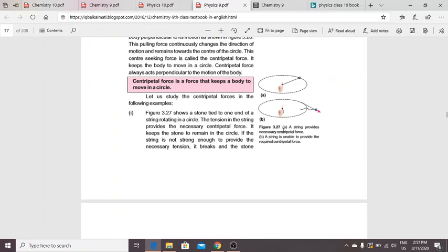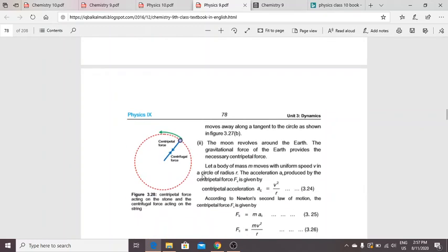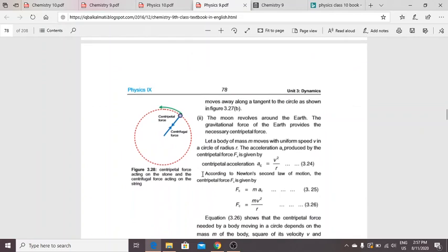For example, we have seen a stone tied to a string. The stone is rotating in a circle. If the string is not strong enough, it will break and the stone will move in a straight line. The moon that revolves around the earth receives the necessary centripetal force from the earth's gravitational force.